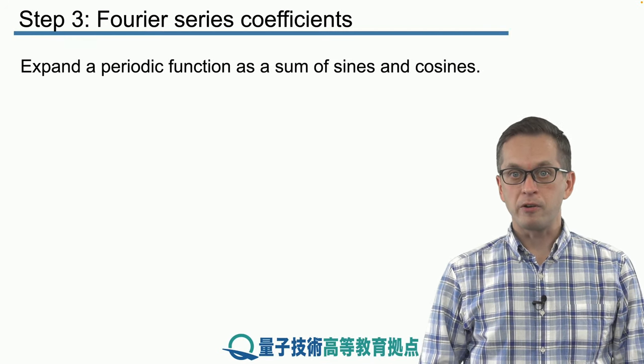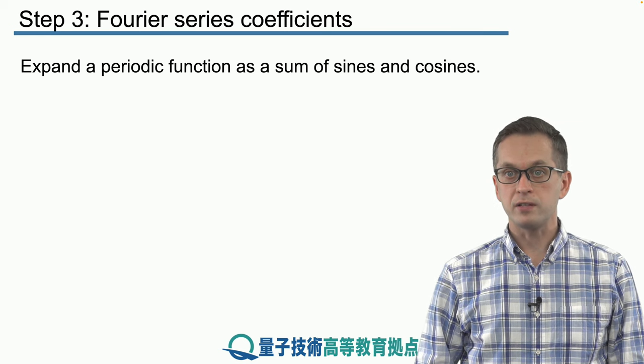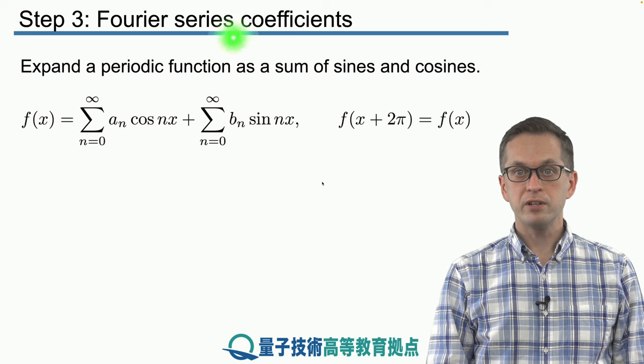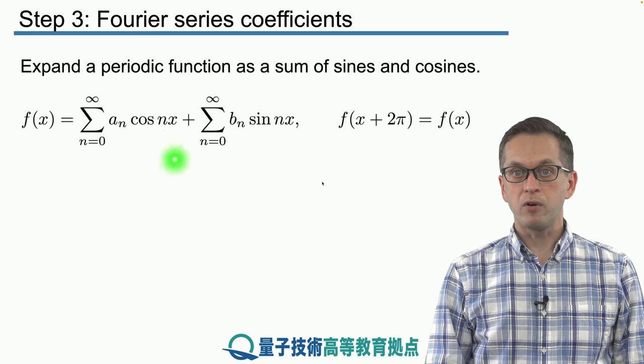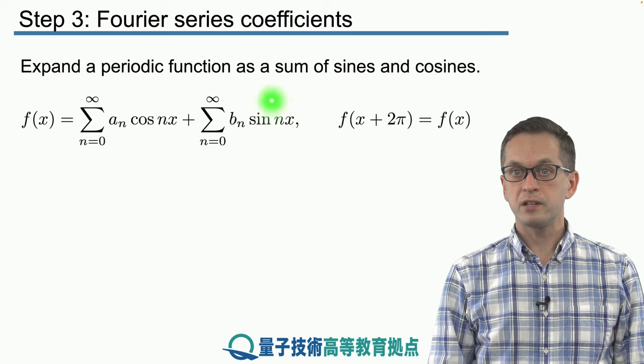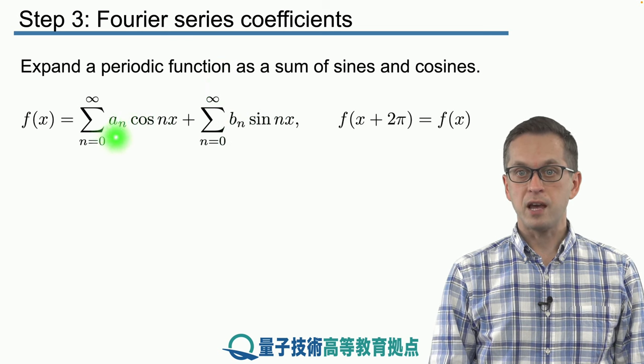Our goal is to expand a periodic function as a sum of sines and cosines and find those weights a_n's and b_n's. Here's our Fourier series. It's a sum of all the cosines oscillating at different frequencies and all the sines oscillating at different frequencies, where the frequencies range from zero to infinity weighted by these b_n and a_n coefficients.